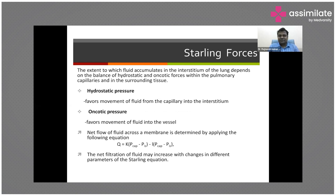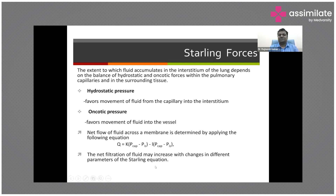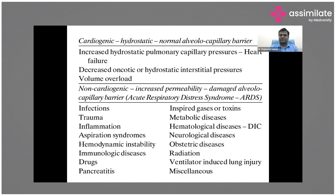Regarding Starling forces in detail: the extent to which fluid accumulates in the interstitial lung depends on the balance of hydrostatic and oncotic forces within the pulmonary capillaries and surrounding tissue. Hydrostatic pressure favours movement of fluid from capillary to the interstitium; oncotic pressure favours movement of fluid into the vessels. Net flow across a membrane is determined by the Starling equation. Net filtration increases when hydrostatic pressure increases, oncotic pressure decreases, or transpulmonary pressure becomes more negative — all causing pulmonary edema.